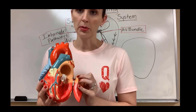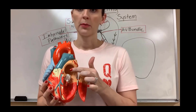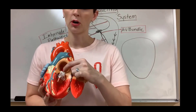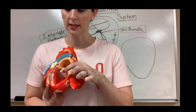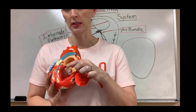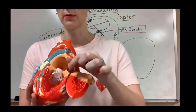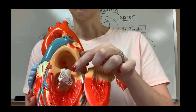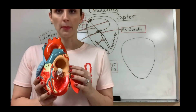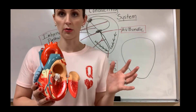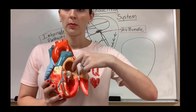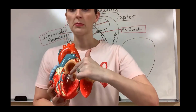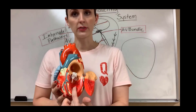In the left atrium, when we open that up, we move this oxygenated blood through a valve known as the bicuspid valve — because it has two cusps. We can also call it the mitral valve; either name is totally fine. So we move through the mitral or bicuspid valve into the left ventricle.